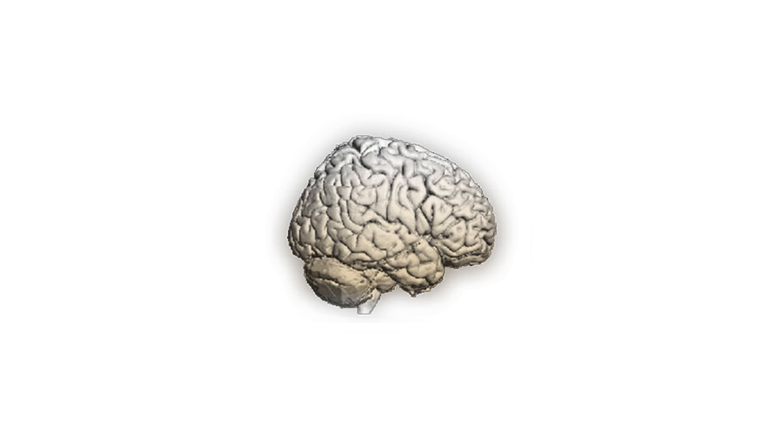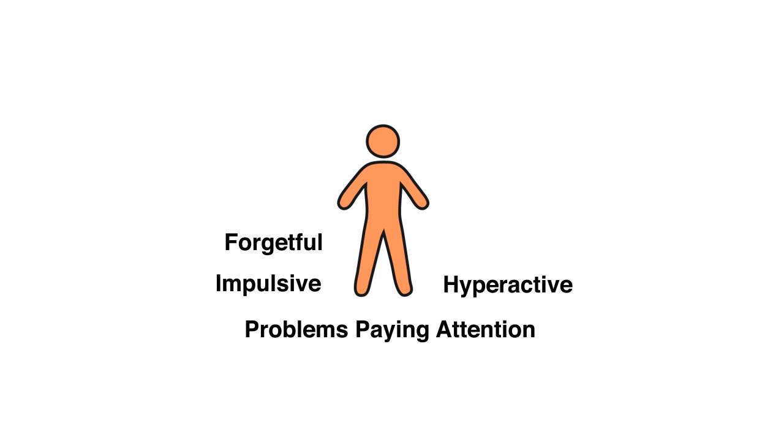ADHD is a brain disorder. The prefrontal cortex, the part of the brain that makes us most distinctly human, is smaller in children who have this condition. A typical child who has ADHD is impulsive, hyperactive, or has problems paying attention. They may be forgetful and often have learning problems.